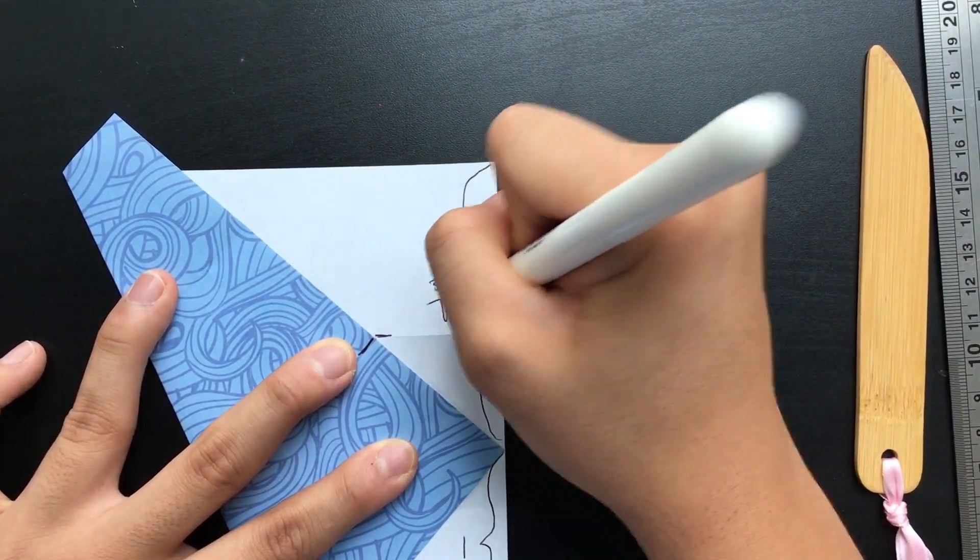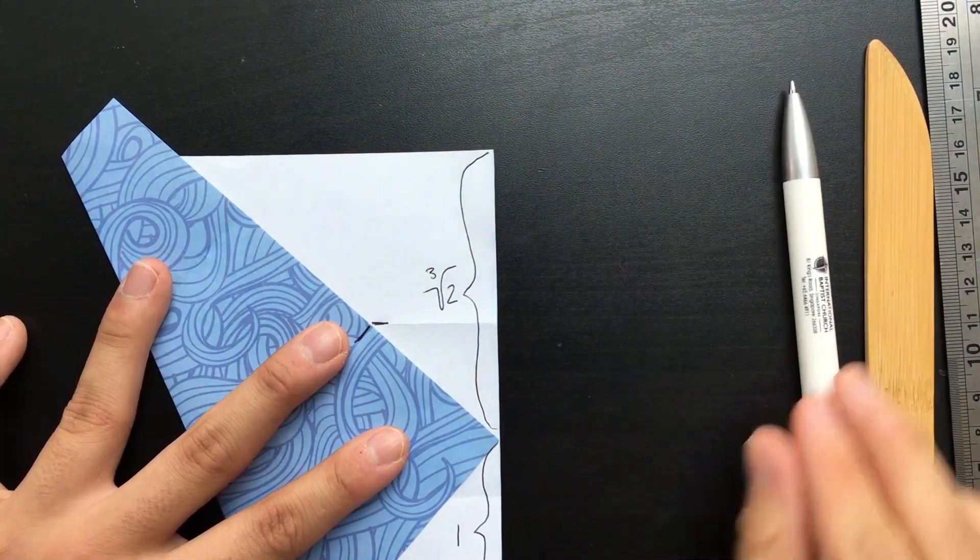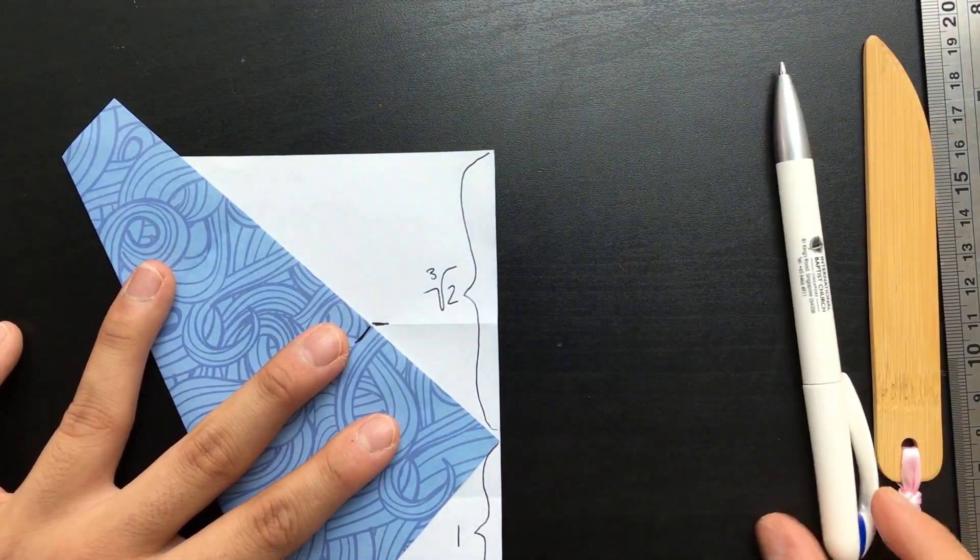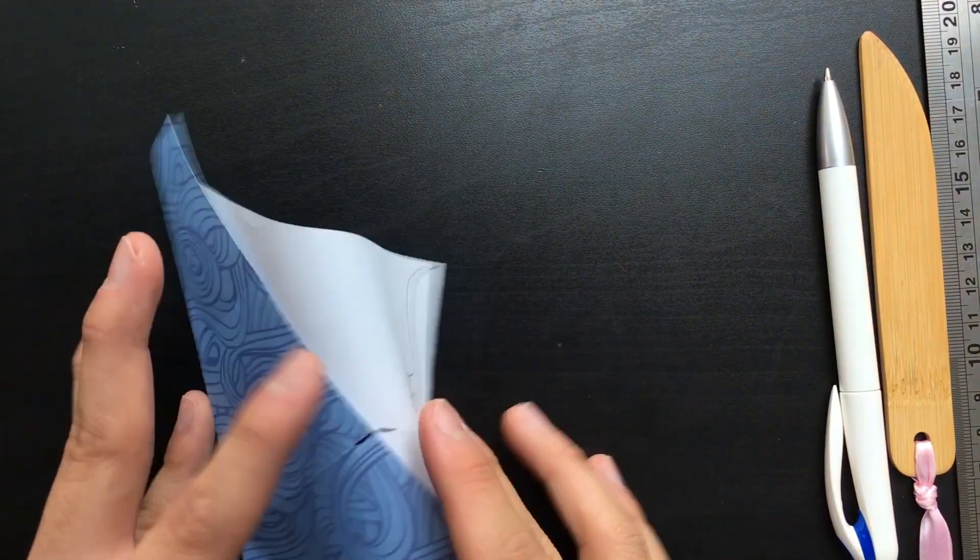And that is how you find the cube root of two real quick and easy with origami.